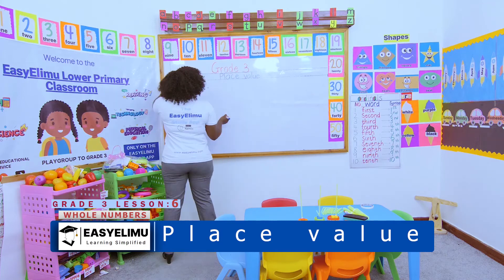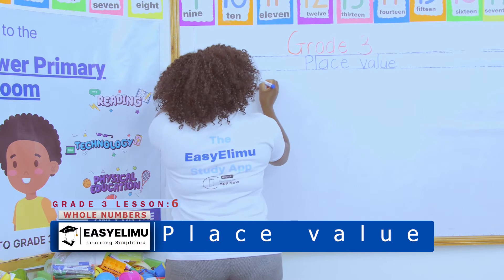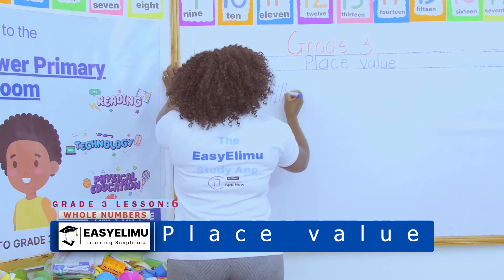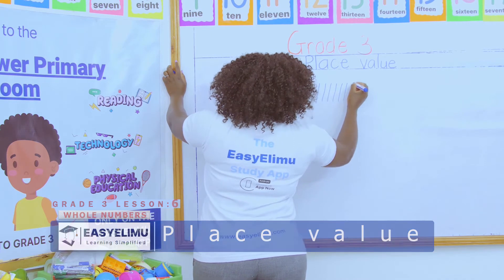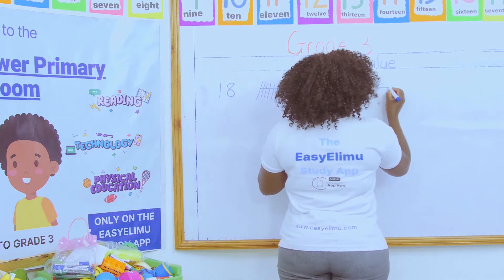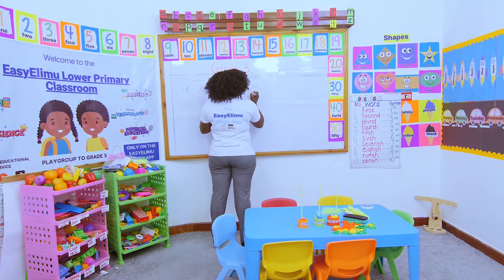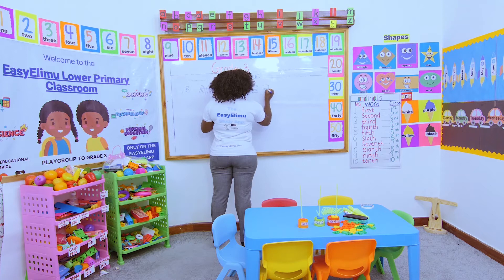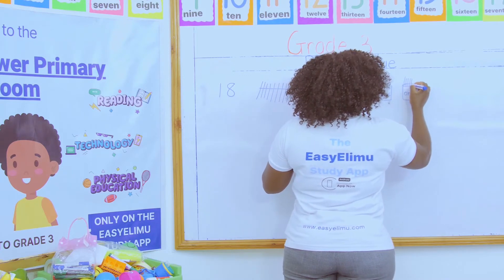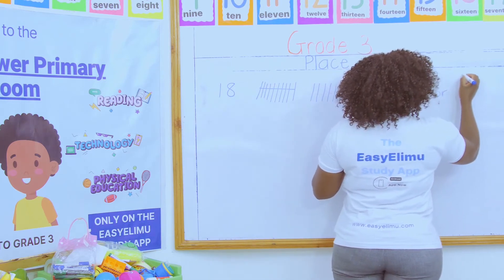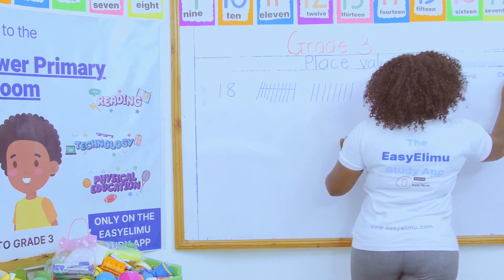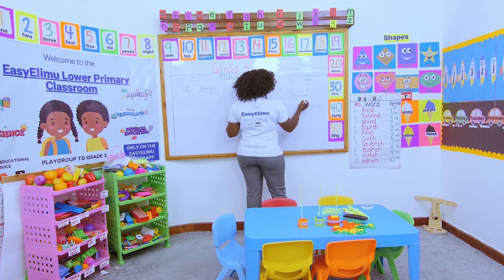For ones and tens: if I'm told to represent a number using bundles of sticks, I just draw one bundle of ten and then the remaining ones. Using the place value chart I say tens and ones — for example, one ten and eight ones. Using the abacus I draw tens on one side and ones on the other.